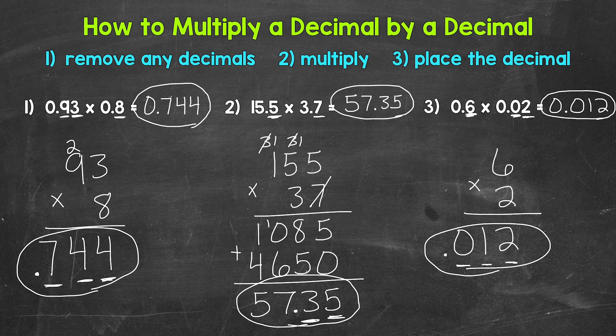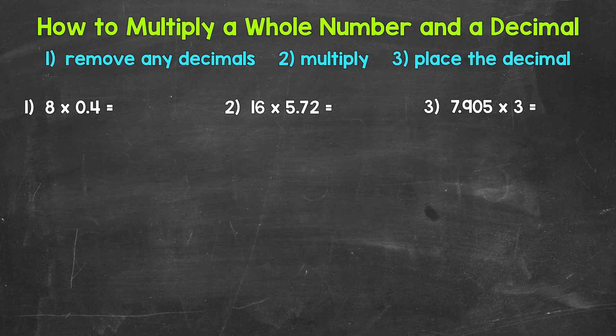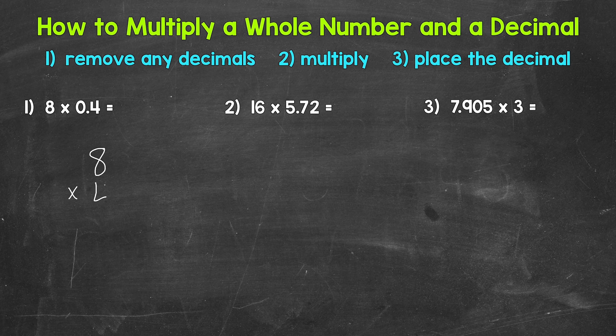So there are our examples for multiplying decimals by decimals. Let's move on to decimals and whole numbers. This will be the same process we just used — we just have whole numbers involved now. Let's jump into number 1 where we have 8 times 4 tenths. The first thing we need to do is remove any decimals, so we rewrite this problem as 8 times 4. Now our second step is to multiply. 8 times 4 gives us 32.